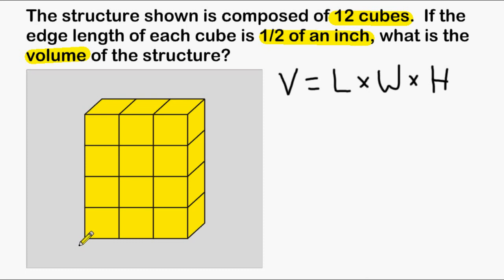The length, the width, and the height of any rectangular prism will always be represented by these three dimensions. So if we can figure out the length of each of these dimensions and multiply them together, that will give us the volume of this rectangular prism.